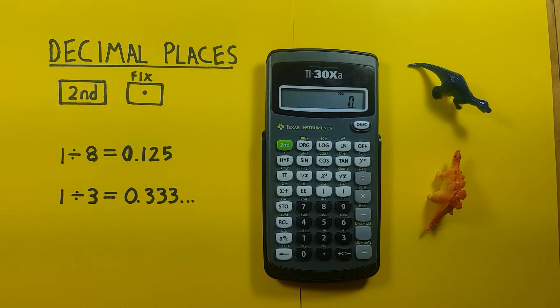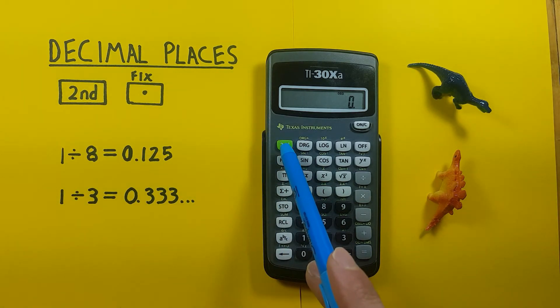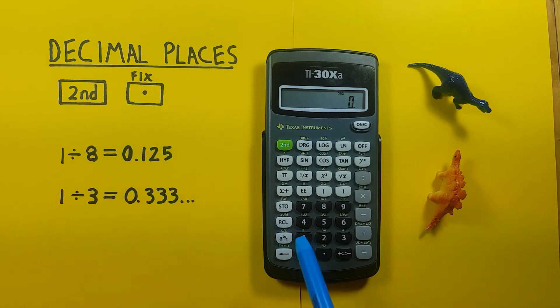In this video we're going to look at decimal places on the TI-30XA calculator. To do this we'll be using the second function key that looks like this, located here, and the fix key that looks like this, which is also the decimal key located here.